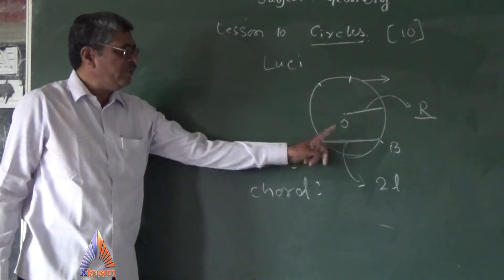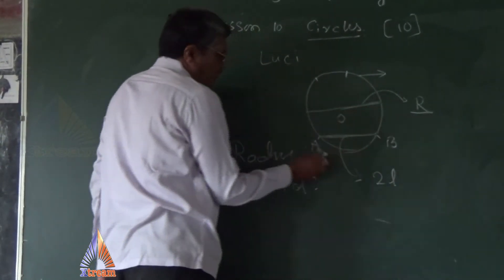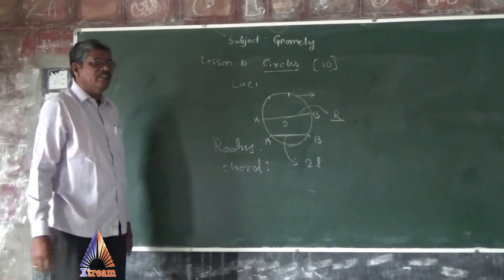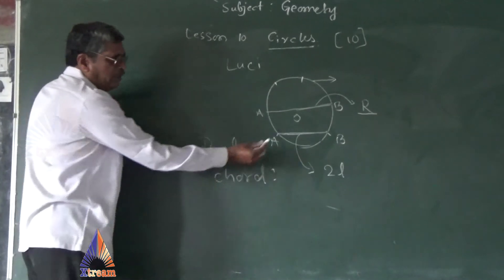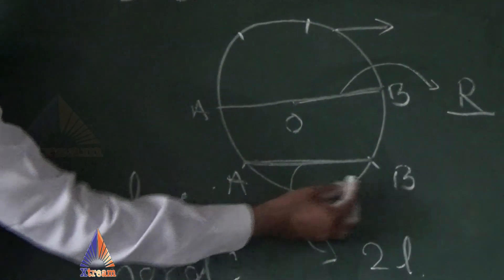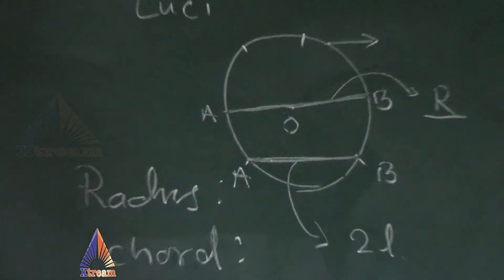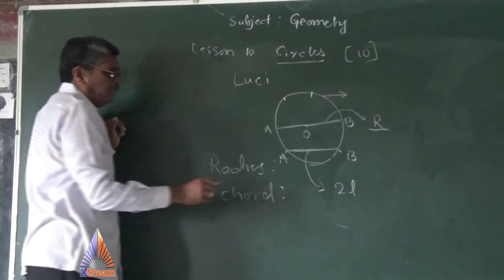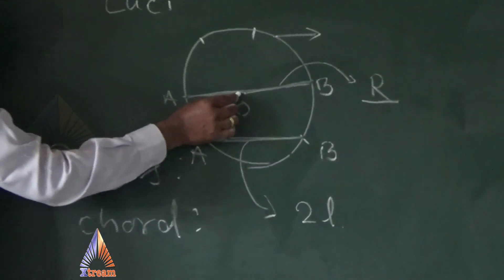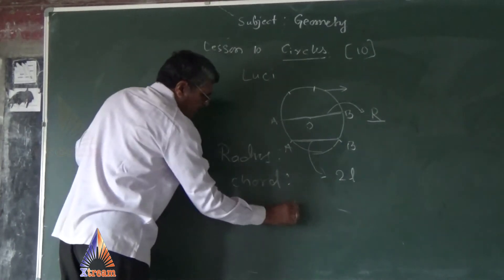An important point: when this chord moves and passes through the center of the circle, it becomes the diameter. The biggest chord of a circle is commonly called the diameter. The diameter is denoted by the letter D. So radius, chord, and diameter are all related — the biggest chord, passing through the center, is the diameter.